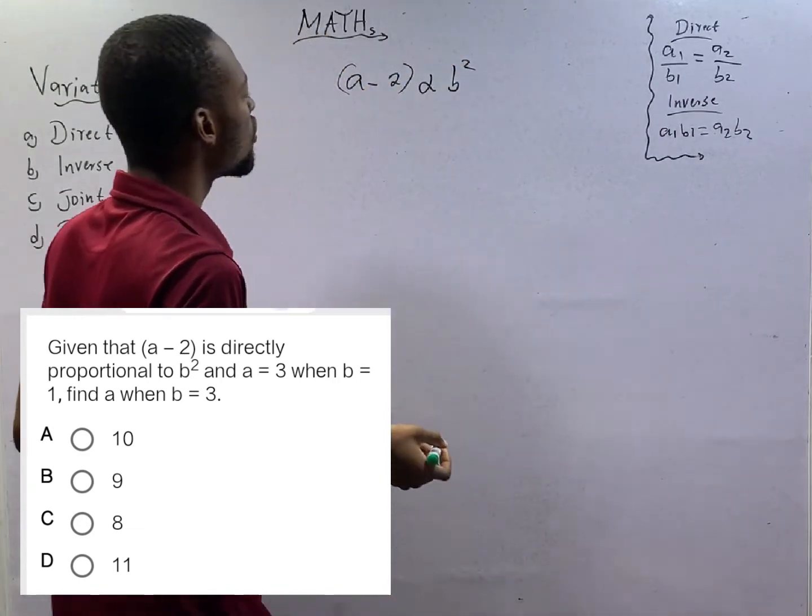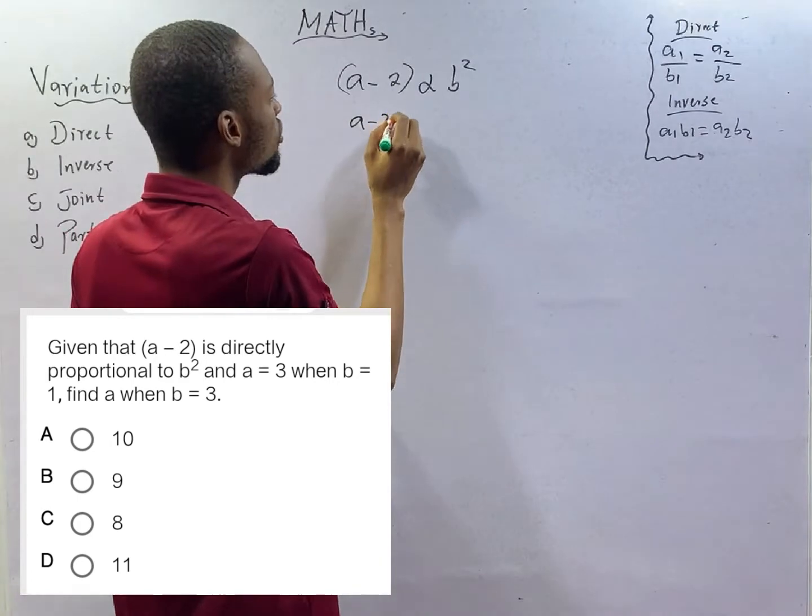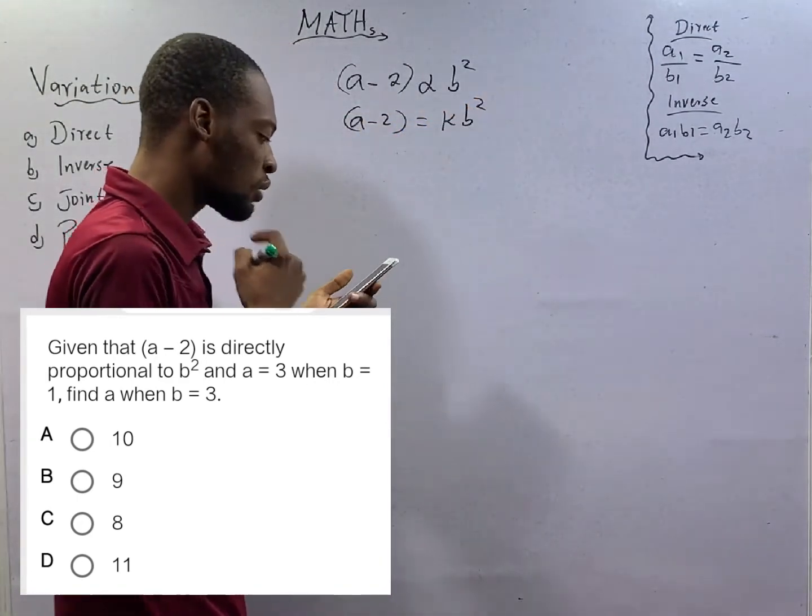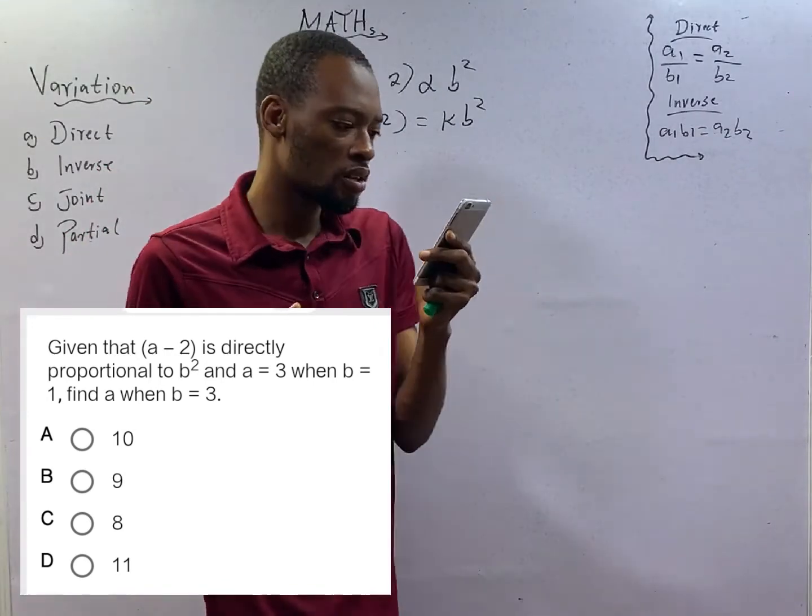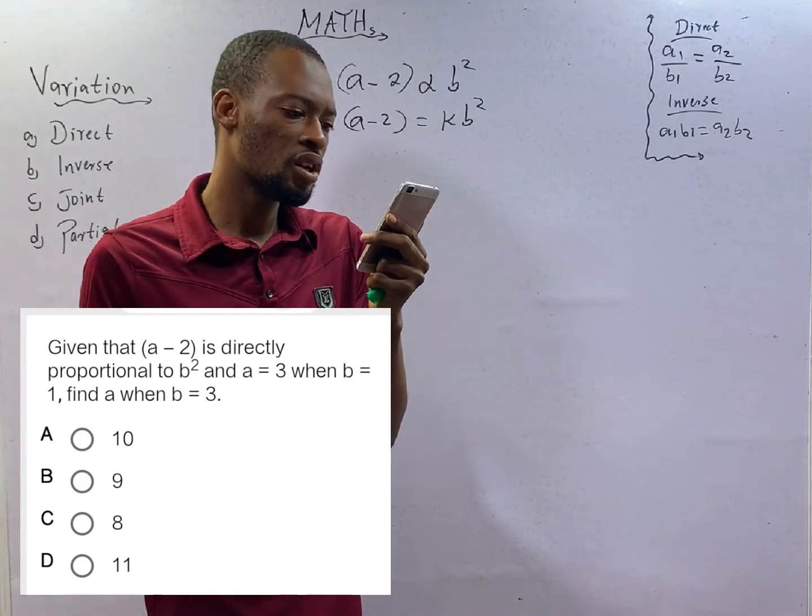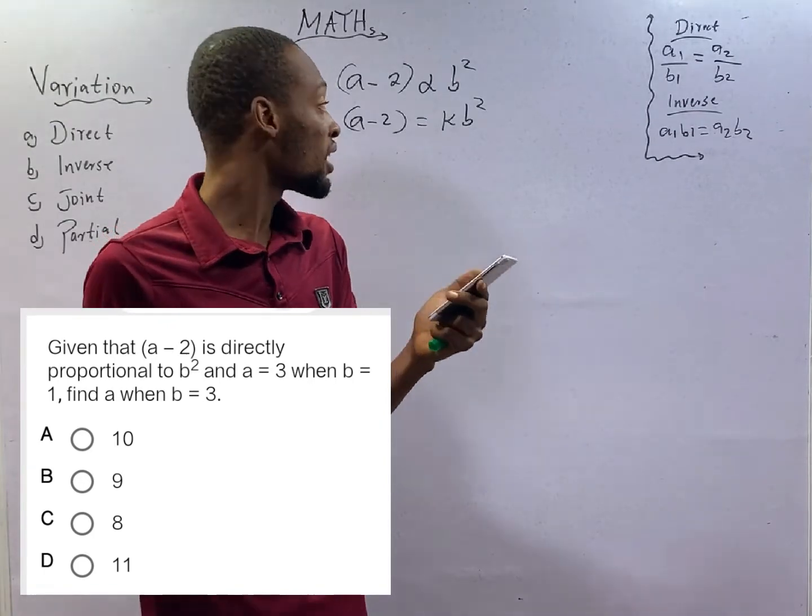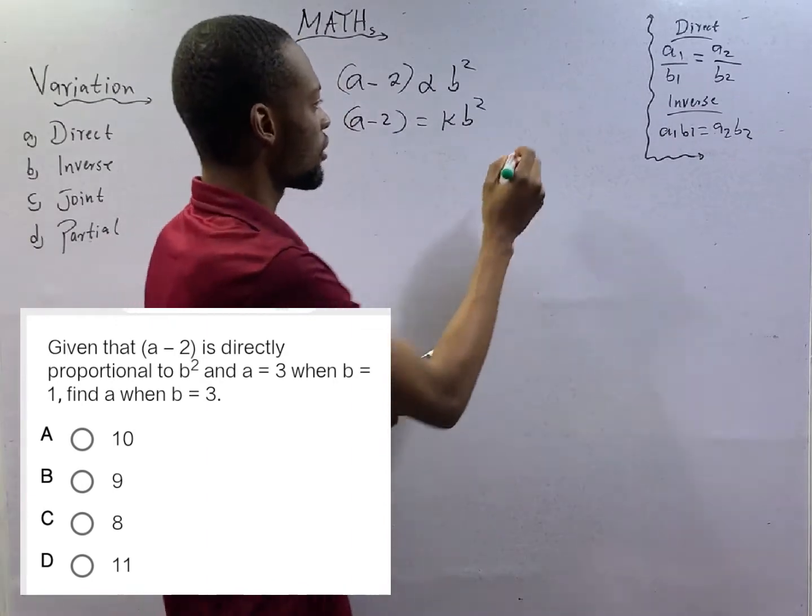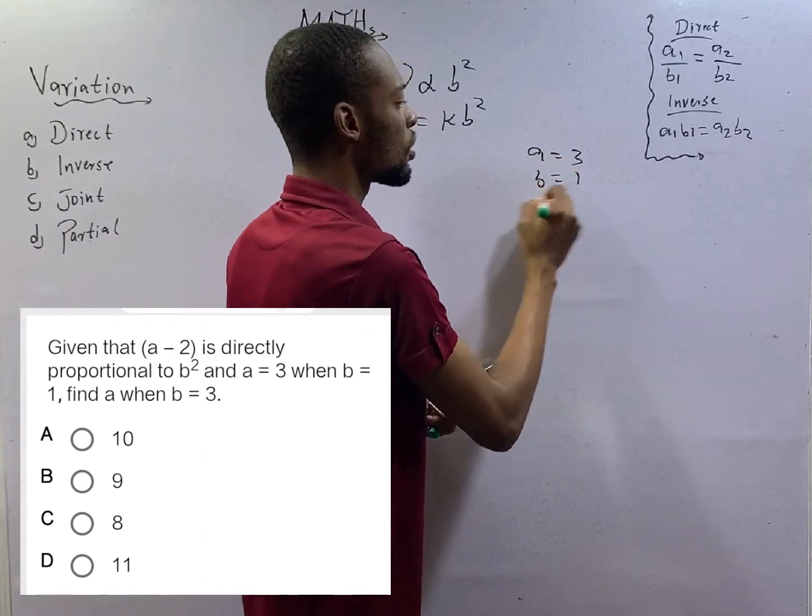From here, we know that (a - 2) equals kb squared. What are we looking for? And a is 3 when b is 1. A is 3 when b equals 1.